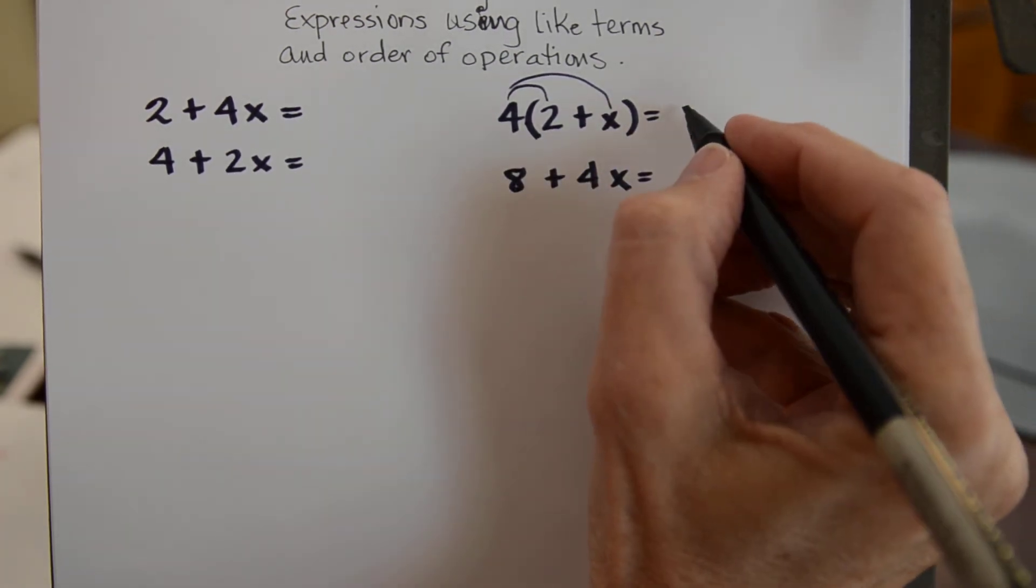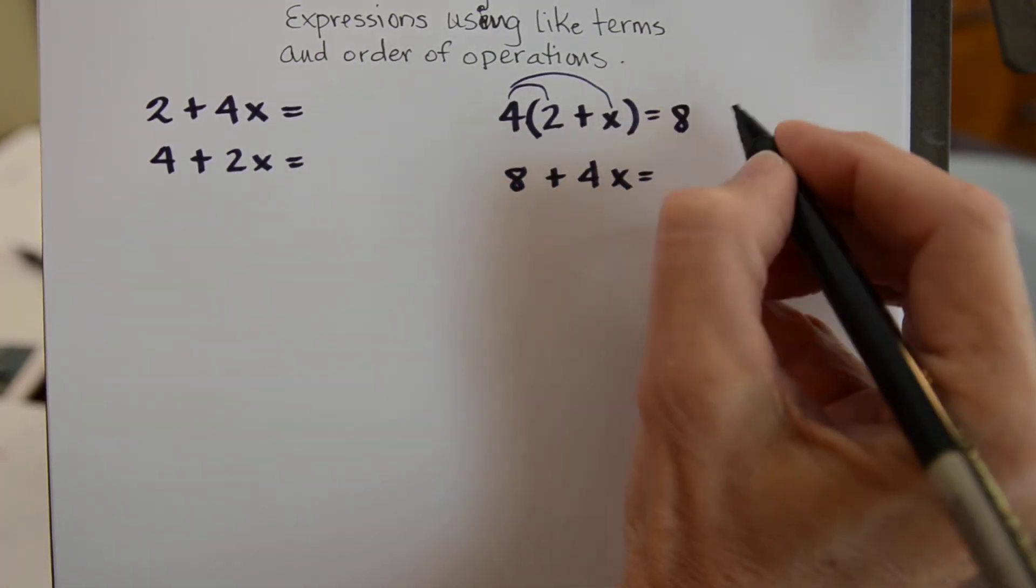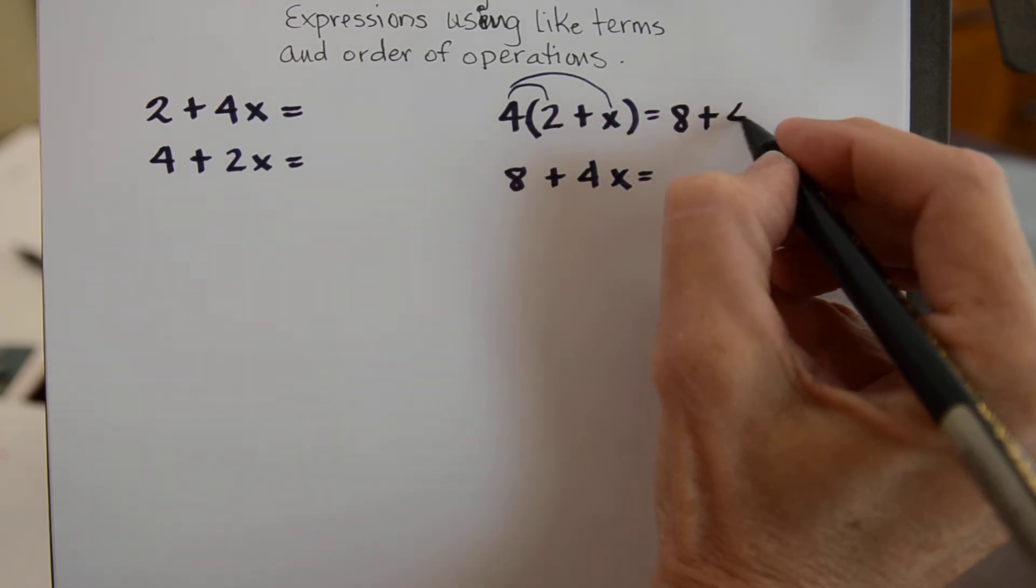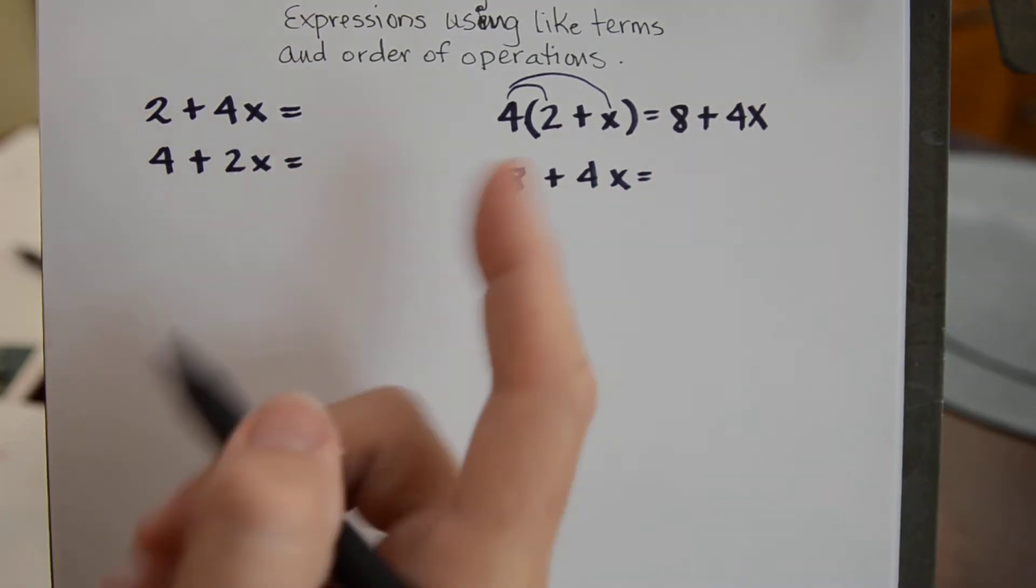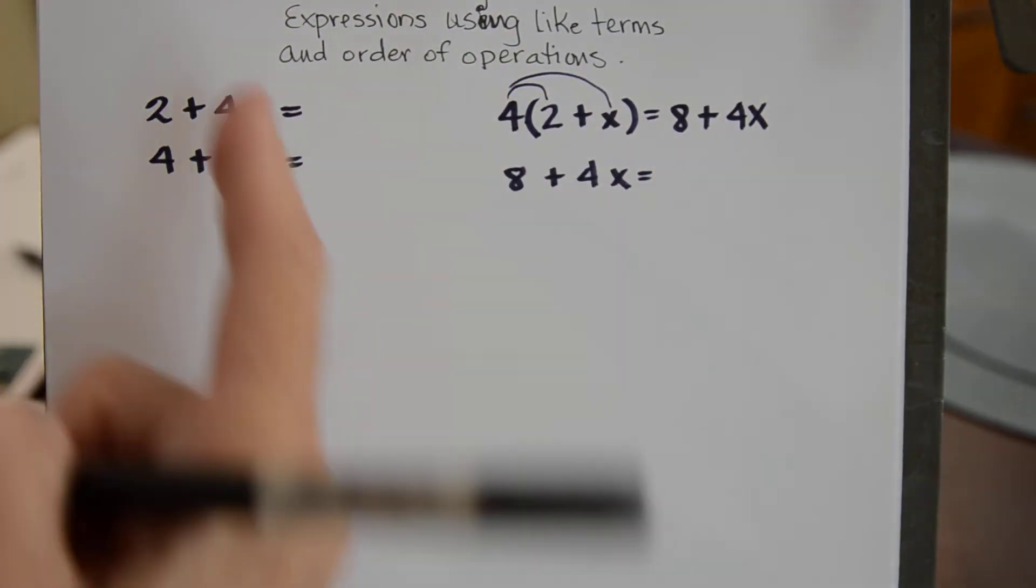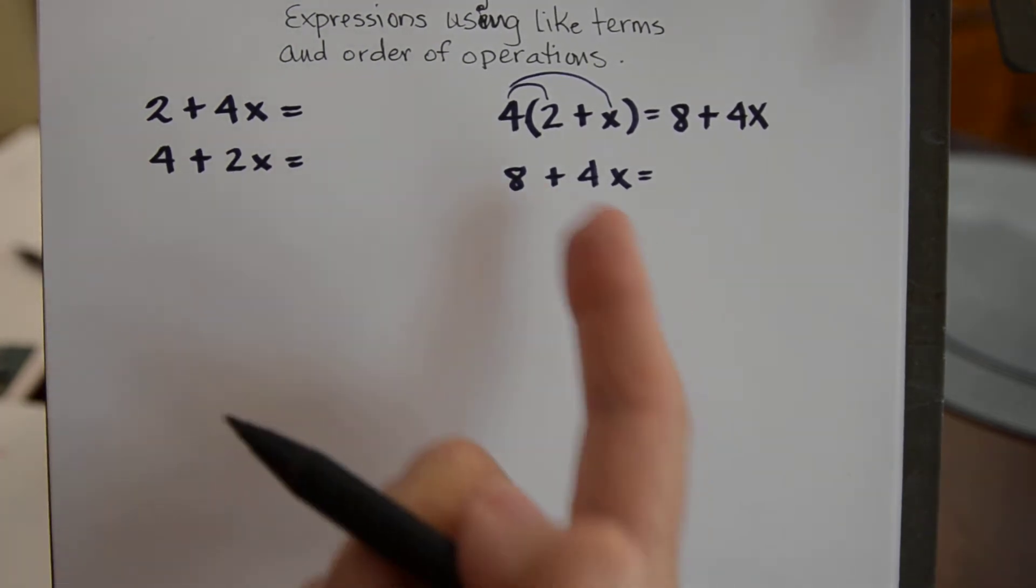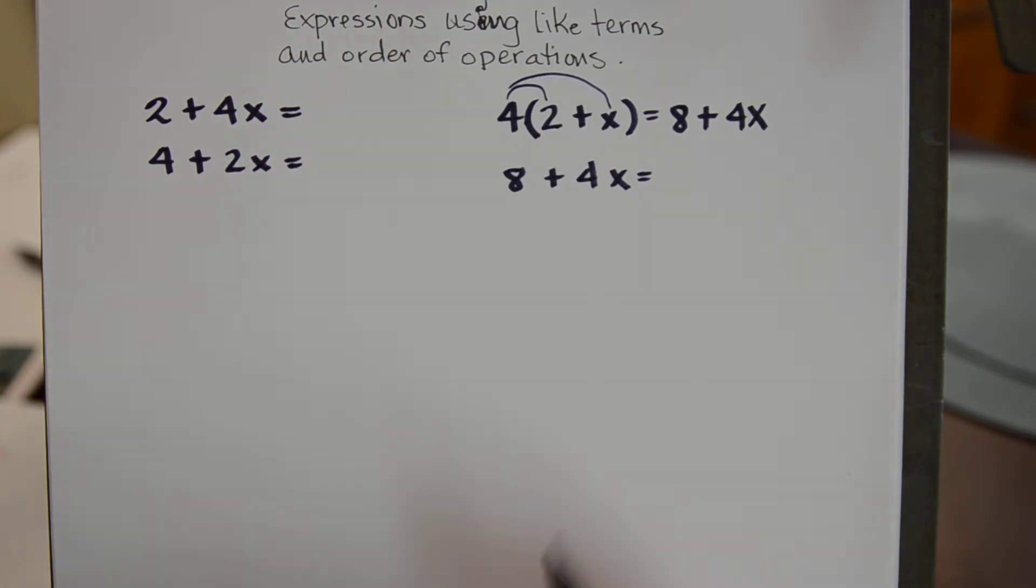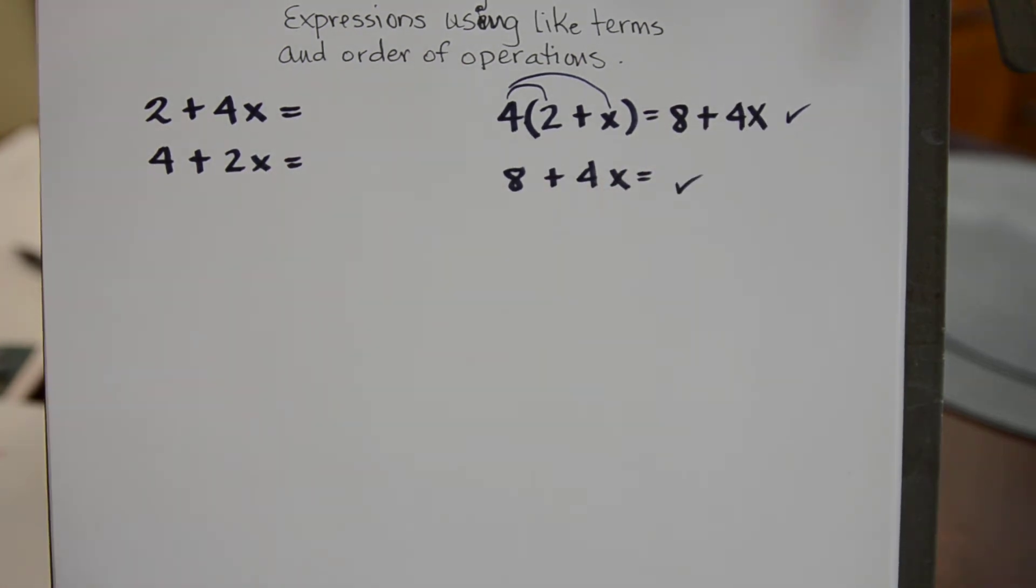So this new answer here or simplification would become 4 times 2 is 8 plus 4 times x which is 4x. So if I were asking you then to say which of these four expressions are equal then you would have to finally say that these two are actually equal. Because they are the same thing when they are simplified and that's as far as we can go.